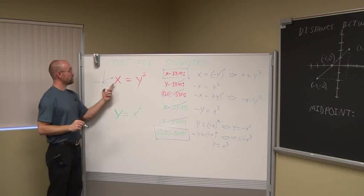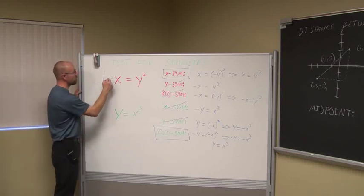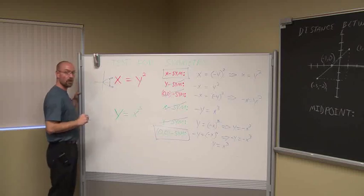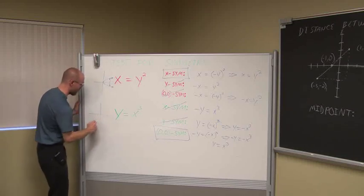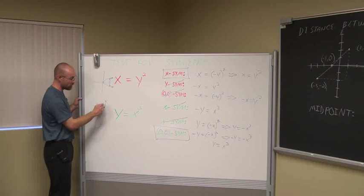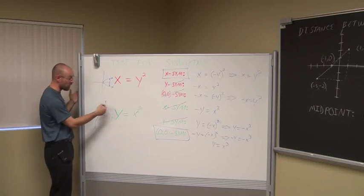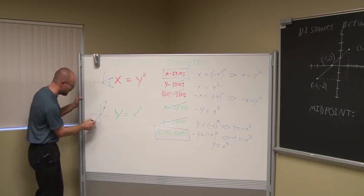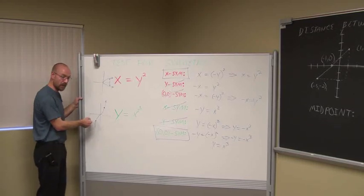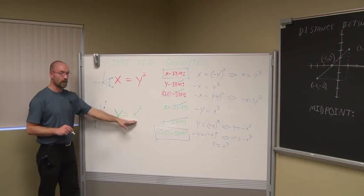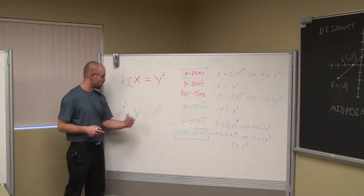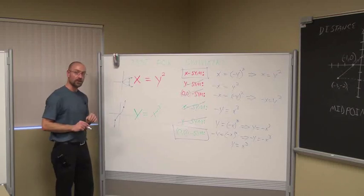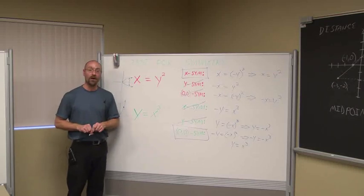Looking at the graph of x = y², we can see that what's above the x-axis is mirrored below it — confirming x-axis symmetry. And for y = x³, for every value in the first quadrant (positive, positive), there is a mirrored value in the third quadrant (negative, negative), confirming symmetry through the origin. That has been section 2.1 — thank you for watching.